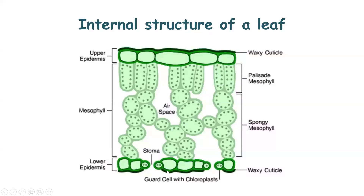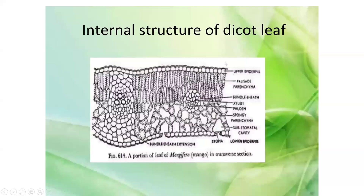The lower epidermis is also present, where stomata are found. In the dicot leaf, the internal structure contains upper epidermis, lower epidermis, and the central mesophyll tissue. The mesophyll tissue is classified into palisade mesophyll and spongy tissue. Palisade parenchyma contains vascular bundles with xylem and phloem. In palisade parenchyma there are no intercellular spaces, but in spongy parenchyma intercellular spaces are present.